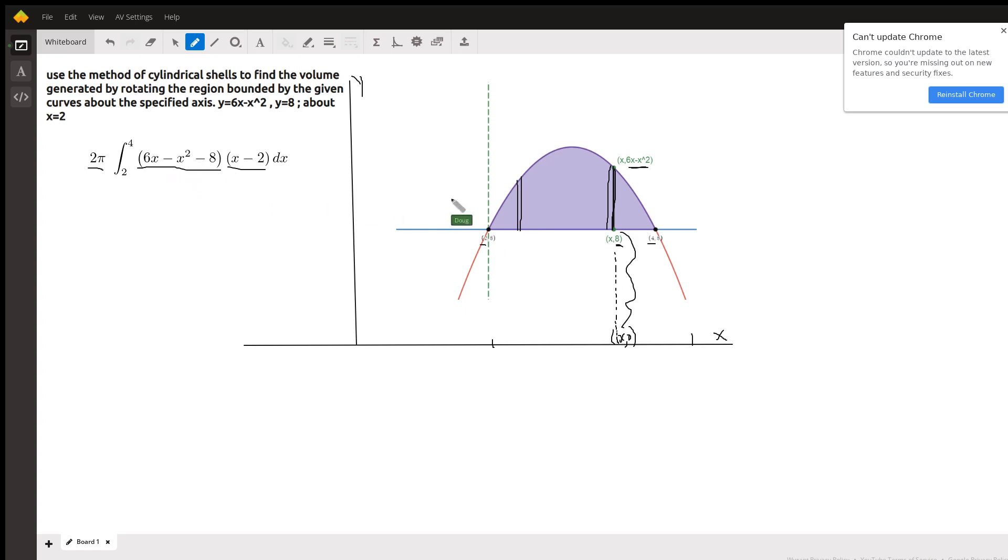The average radius is the distance from the axis of revolution to the center of the shell. Okay, so if this is an x coordinate right here, that's really the distance from the y-axis to that x coordinate.